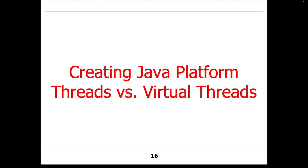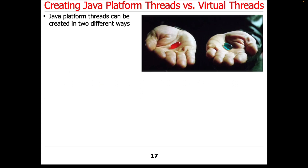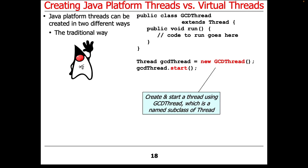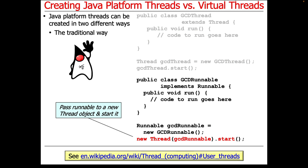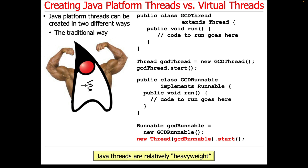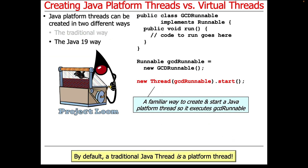Let's talk about some ways of creating platform threads versus virtual threads. A Java platform thread can be created in two different ways. One is the traditional way, where you define a class that extends Thread, make a new thread of that type, and start it. Likewise, you can make a Runnable and pass it to a new Thread — which is a platform thread, by the way. This is not anything different from what we've seen for many decades. Keep in mind that Java Thread objects created the old-fashioned way are relatively heavyweight. By default, a traditional Java thread is a platform thread if you use the old API.